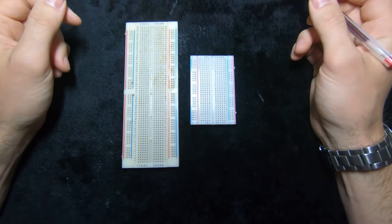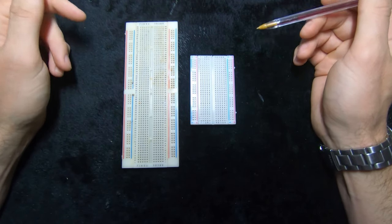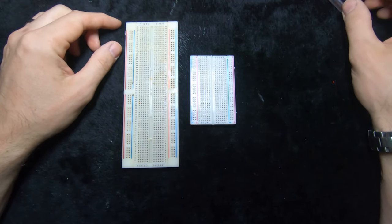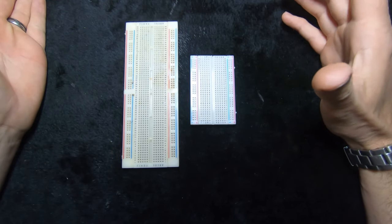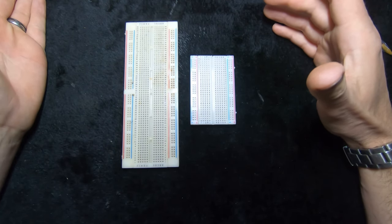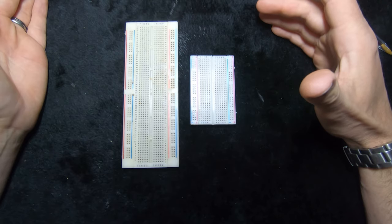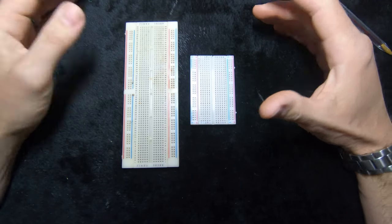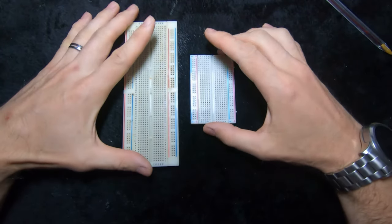Now we're going to start with the things you need to make up an electronic circuit to simulate the circuit before you actually make it permanent. So these two things here are called breadboards.